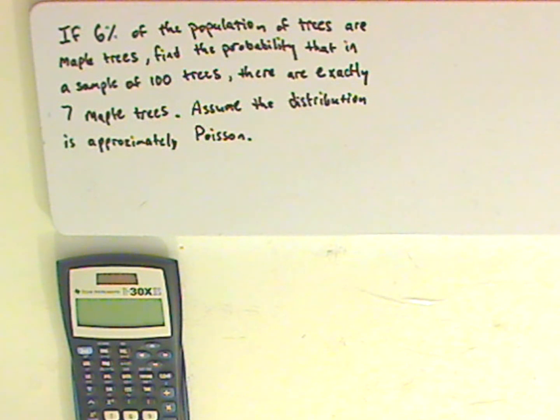So let me read the problem. If 6% of the population of trees are maple trees, find the probability that in a sample of 100 trees, there are exactly 7 maple trees. Let's assume that the distribution is approximately Poisson.